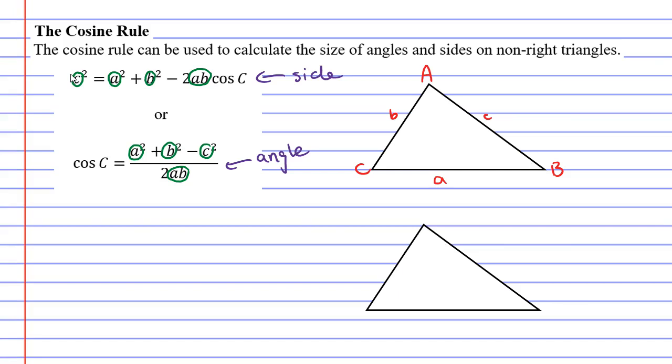We also notice that both formulas have a capital C representing an angle like so. Now the cosine rule is used when you have three sides and only one angle marked.